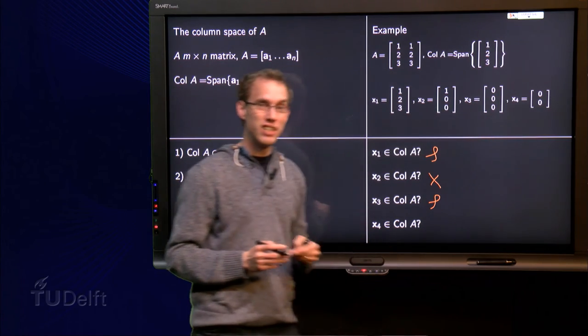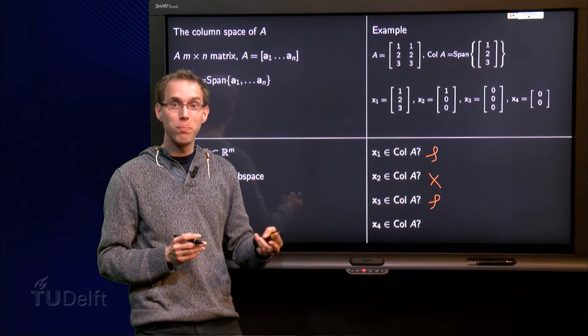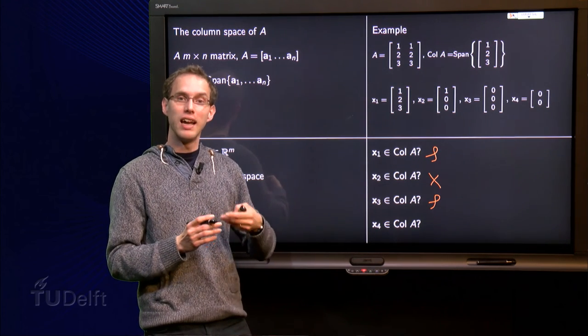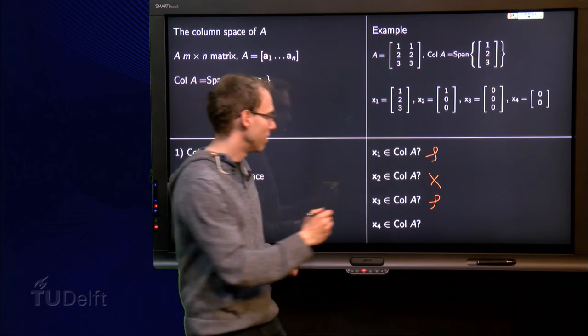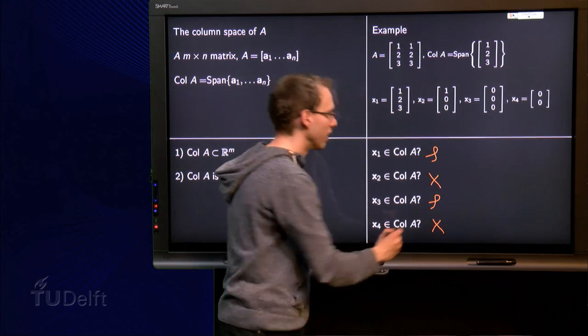This vector is a 0 vector but has only two components. So it cannot be in the column space of A because it does not have enough components. So x4 is not in the column space of A.